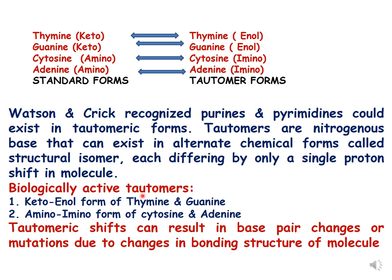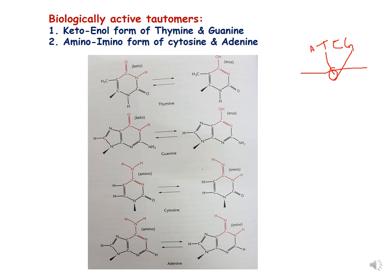The biologically active tautomers are: keto and enol forms of thymine and guanine, where the keto form is standard and the enol form is tautomeric; and amino and imino forms of cytosine and adenine, where the amino form is standard and the imino form is tautomeric. Tautomeric shifts can result in base pair changes or mutations due to changes in the structure of these bases. You can refer to the book Klug and Cummings for this.